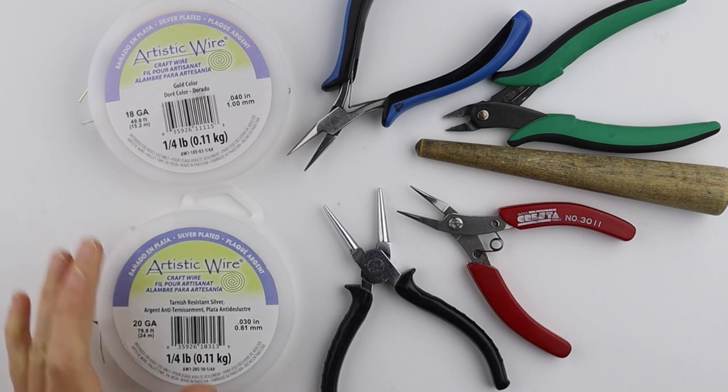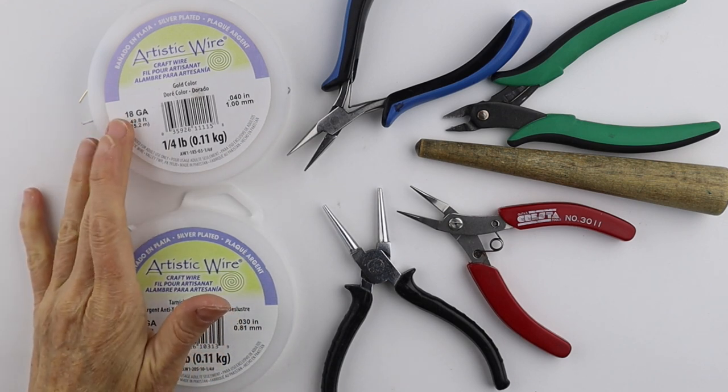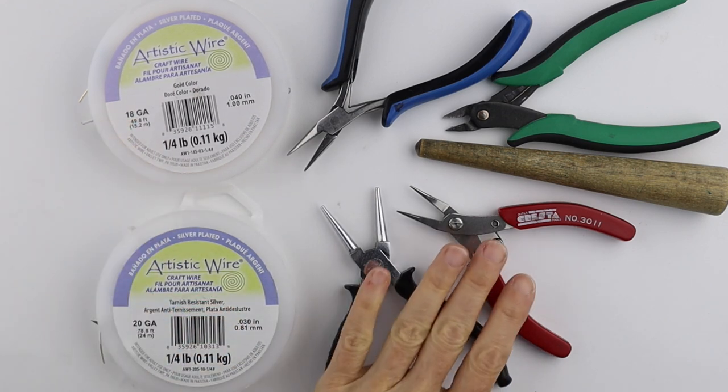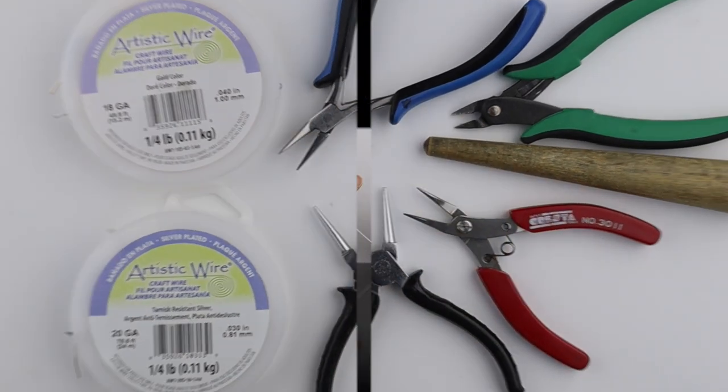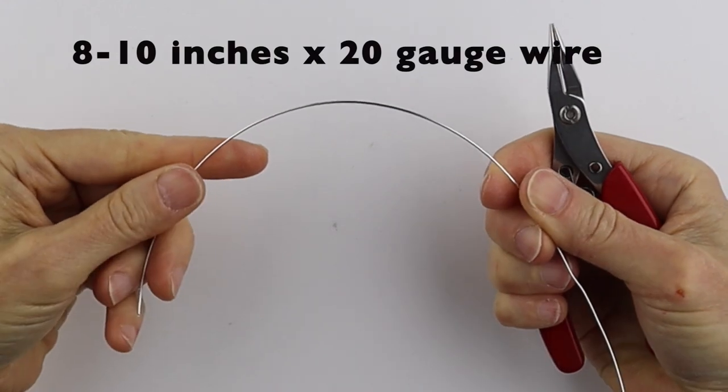For this project is 20 or 18 gauge copper wire and your tools. I have round pliers, flat pliers, cutters, and my ring cone. I'm going to start with an 8 to 10 inch piece of 20 gauge wire.